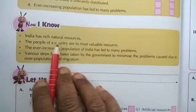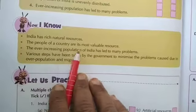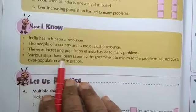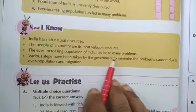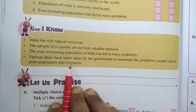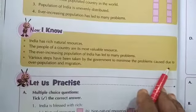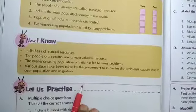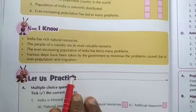Let us see the main points of this chapter: India has rich natural resources. The people of a country are its most valuable resource. The ever-increasing population of India has led to many problems. Various steps have been taken by the government to minimize the problems caused due to overpopulation and migration. That's all for today. Thank you. Have a nice day. Stay home, stay safe.